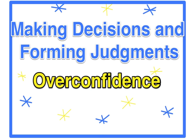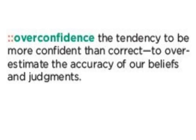This is when our error in judgment is an error in assessing our own ability to judge things. So overconfidence is defined as the tendency to be more confident than correct, to overestimate the accuracy of our beliefs and judgments. In plain English, it just means that we can believe very strongly in something even when we're wrong.